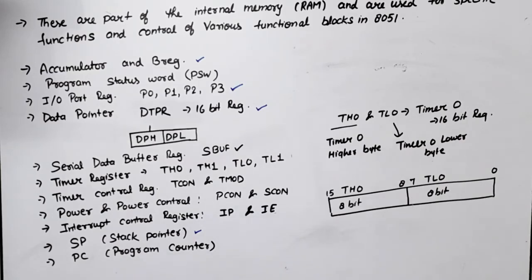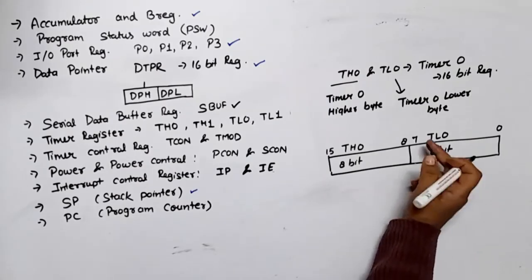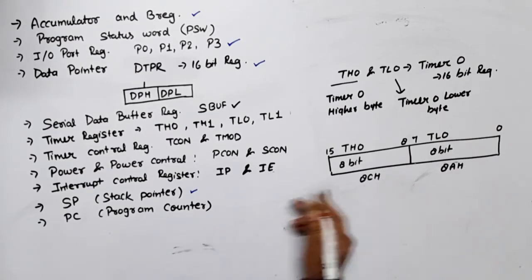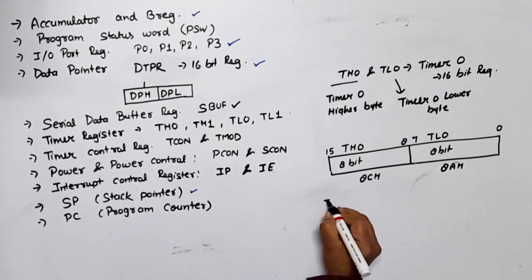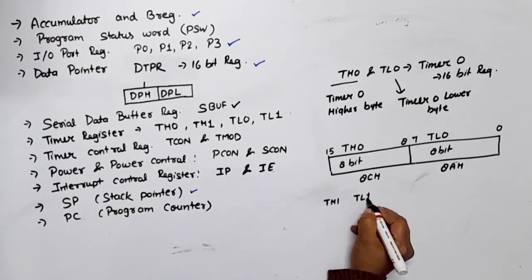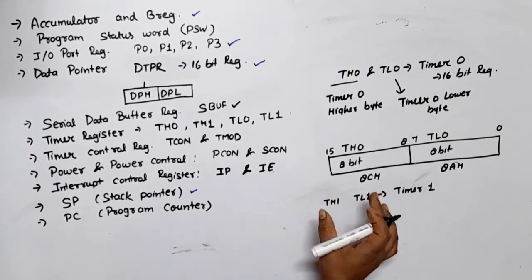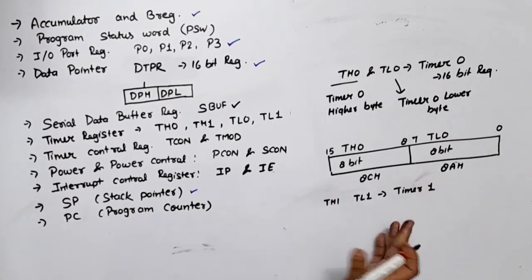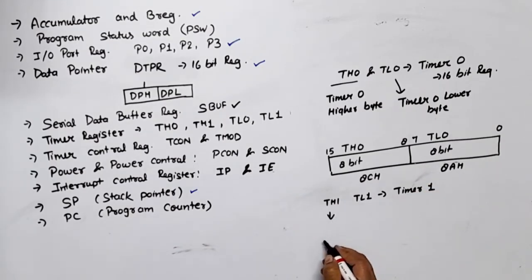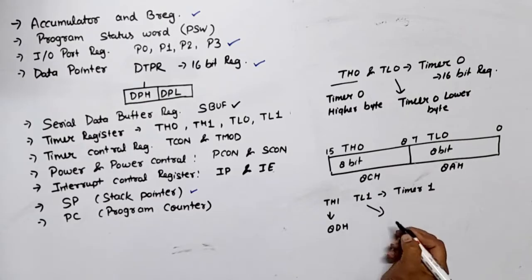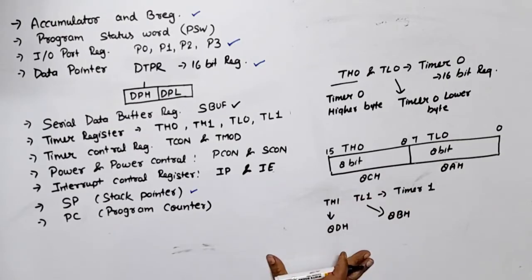The RAM address for TL0 is 8Ah and for TH0 is 8Ch. For Timer 1, TH1 and TL1 are used in the same way. The address for TL1 is 8Dh and the address for TH1 — the lower byte of Timer 1 — is 8Bh. These registers store the degree count values.